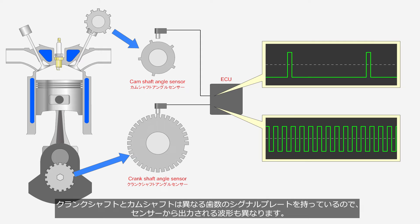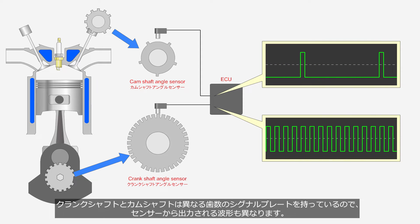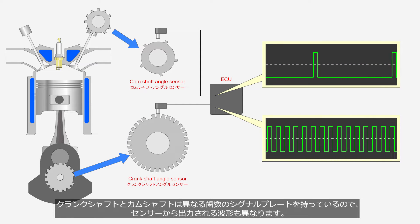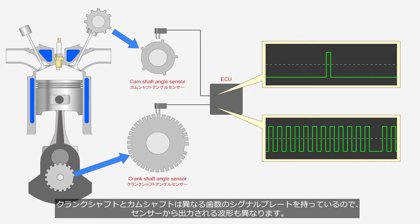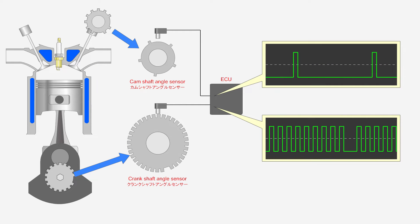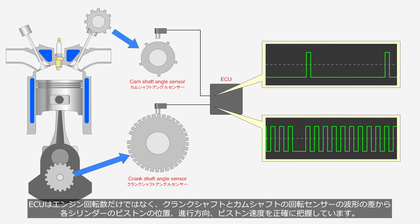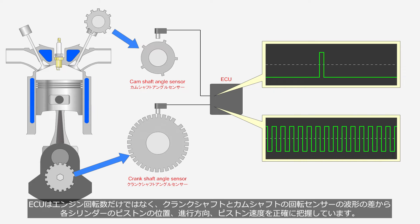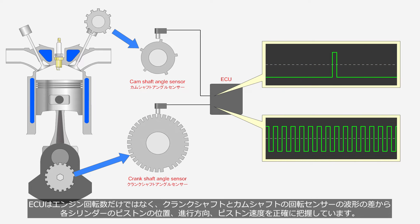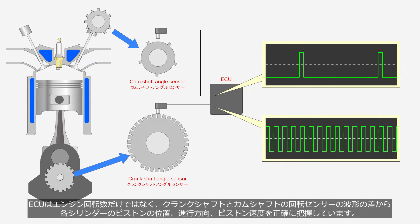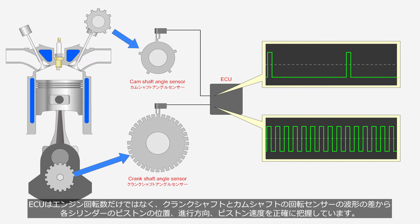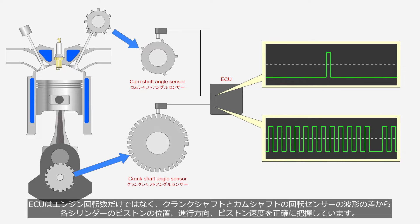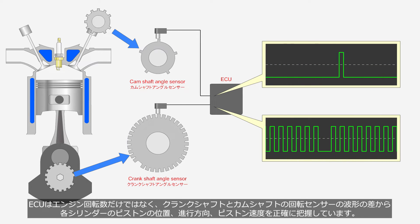The crankshaft and camshaft have different shape signal plates, so the waveforms outputted by the rotation sensors are also different. The ECU not only monitors the engine rotation speed but also accurately determines the position, direction, and speed of pistons in each cylinder, based on the differences in waveforms from the crankshaft and camshaft rotation sensors.